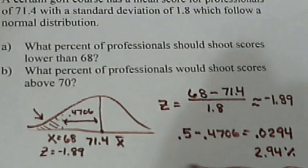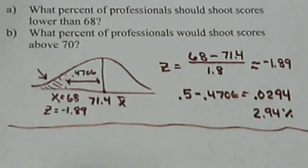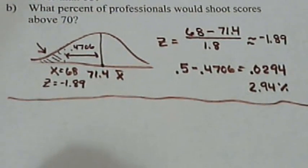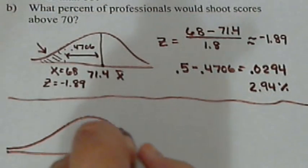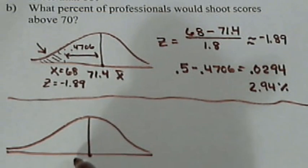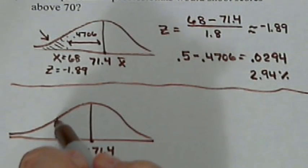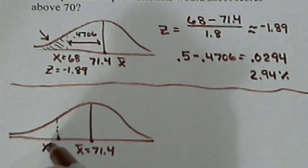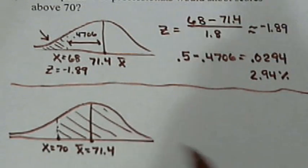All right, so let's move on to part B. Part B wants to know what percent shoot above 70. So for part B, we're going to draw another picture. Here's our curve again. Here's our mean, 71.4. This time we want to go above 70. So let's say 70 is right there. So that gives us, means we want all of this here, not just to the mean, all the way across.